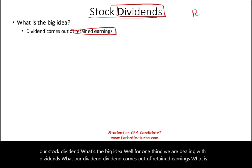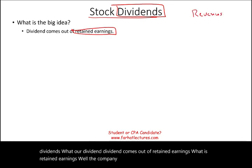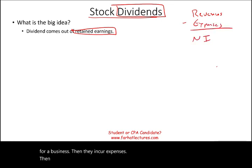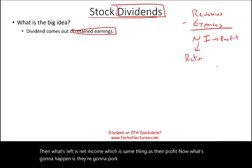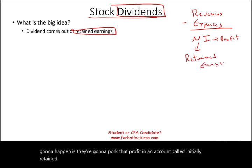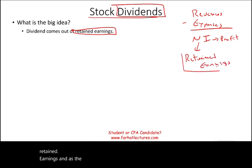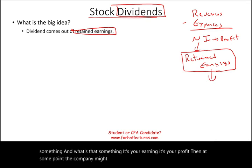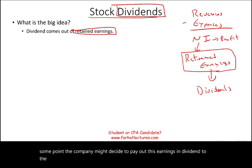What is retained earnings? The company generates revenues — that's what they do for a business. Then they incur expenses. What's left is net income, which is the same thing as their profit. They're going to park that profit in an account called retained earnings. They are retaining — keeping — their earnings, their profit. At some point, the company might decide to pay out these earnings in dividends to the shareholders. And this is what a dividend is.